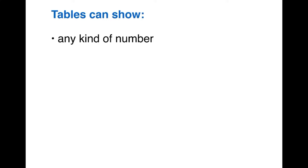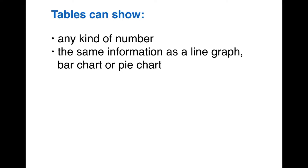Tables can show any kind of number: millions, billions, percentages, money, etc. It's also important to remember that tables can show the same information as a line graph, bar chart, or pie chart. So the information and the approach and method from the last three lessons will be relevant to this lesson. Everything we've learnt about line graphs, bar charts, and pie charts can be relevant for table descriptions too.